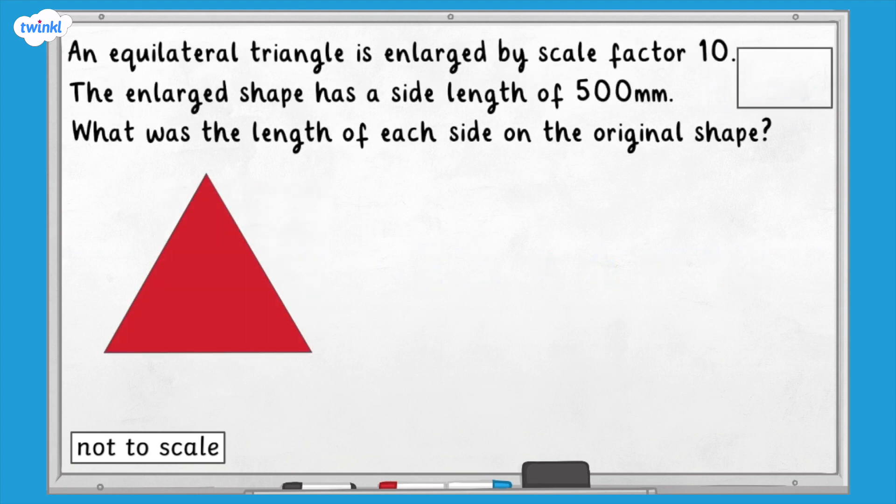Now it's your turn. An equilateral triangle is enlarged by scale factor 10. The enlarged shape has a side length of 500 millimeters. What was the length of each side on the original shape?